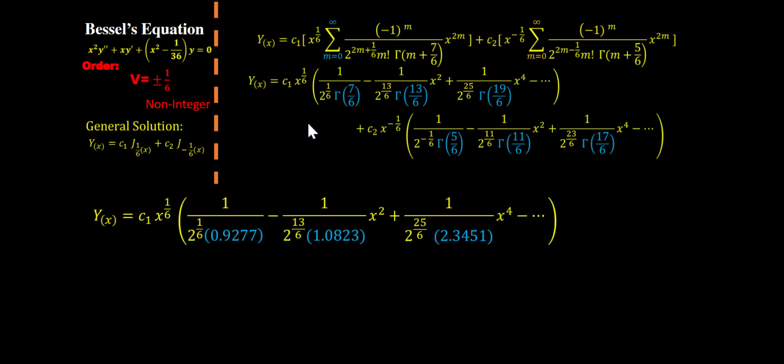As you can see, gamma function of 7/6 looked up its value in that table and we can plug it in right here: 0.9277. There's a few more decimal places there but this is good enough for us. That's what we did for every single term.